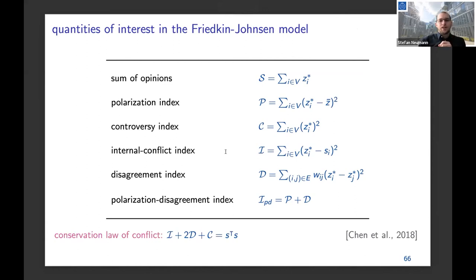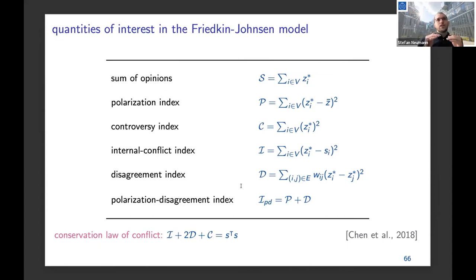There are strong relationships between these indices. Xi Chen et al. showed a conservation law of conflict: if you sum internal conflict, two times disagreement, and controversy, this equals the squared norm of the innate opinions. Since the innate opinions are fixed, there's a trade-off between these indices. For example, if you want to reduce internal conflict, you have to either increase the disagreement index or increase the controversy. You can't make all measures go down to zero simultaneously.